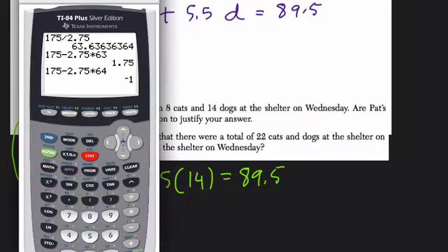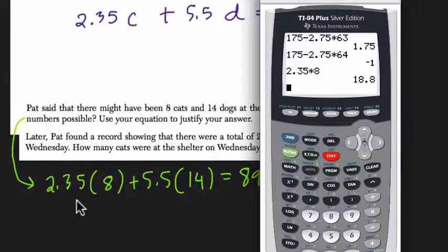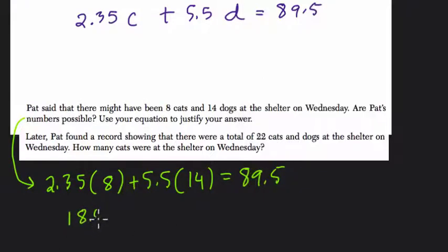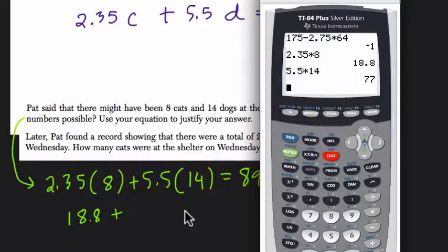So we do the multiplication to justify it. $2.35 times 8 is $18.80 plus 5.5 times 14, 77.